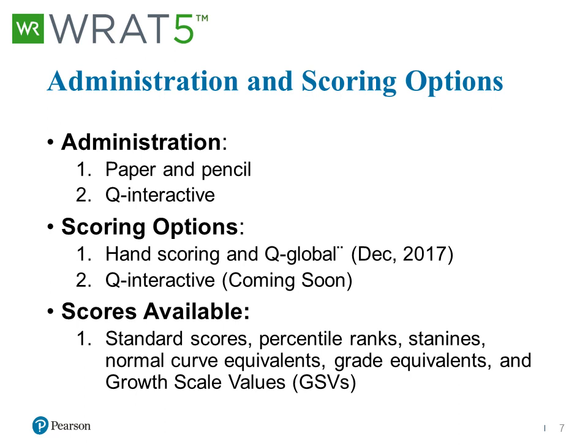It's important to remember what scores are available. With standard scores, we're able to compare a person's performance to a standard population — for example, how a 60-year-old client did compared to other 60-year-olds. We're also able to look at percentile ranks, stanines, NCEs, grade equivalents, and growth scale values. The growth scale value is a representation of a person's performance across time — it's a transformation of the raw score that's not dependent on a standard population's performance, but on a person's performance over time.